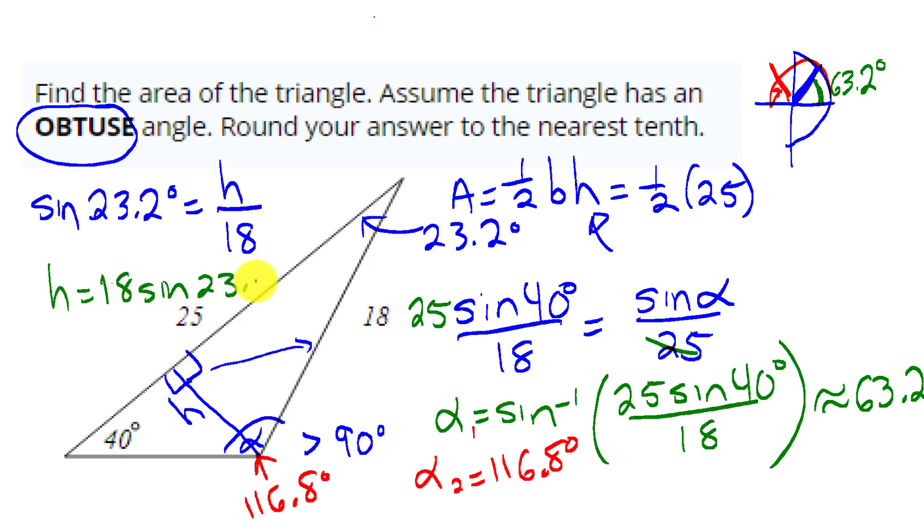I'm going to take that and put that in right over here where I needed the height. So I've got 18 times sine of 23.2. Now I'm going to put this in the calculator.